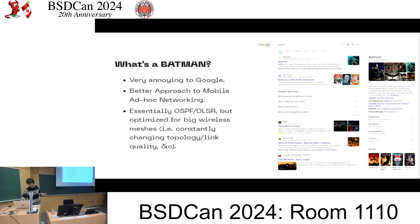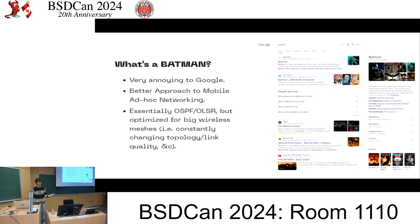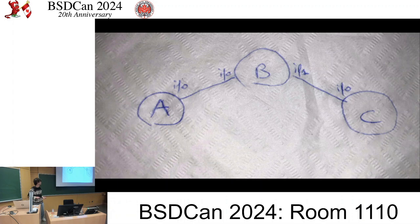Now, Batman. First, Batman is very annoying to Google. It stands for the Better Approach to Mobile Ad-Hoc Networking. It's essentially what OSPF or OLSR does, but it's optimized for really big wireless meshes - meshes where you're constantly changing topologies and link qualities, which on big networks OLSR can be fairly slow at.